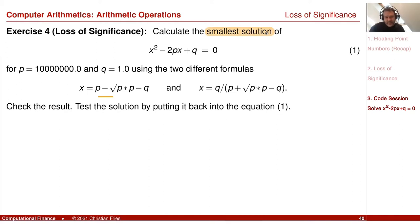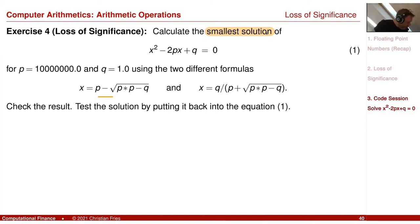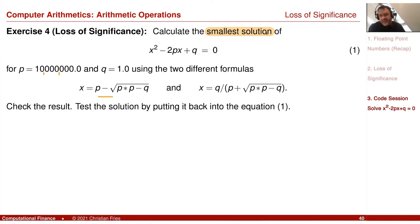I assume that the root exists, so the square root should be okay. I would like to look at this for p equals 10 million and q equals one. Let's just implement this in the computer.